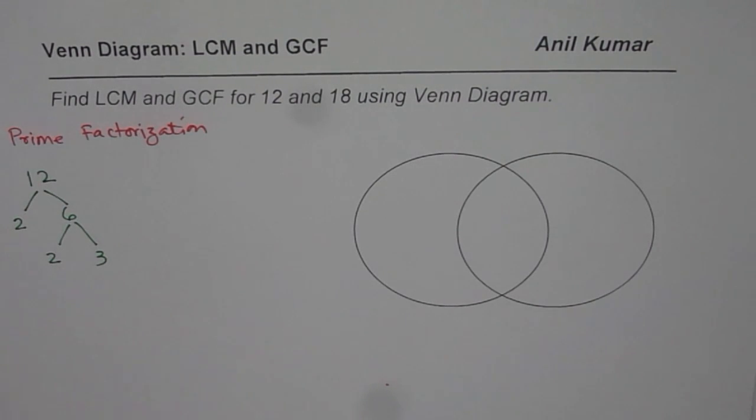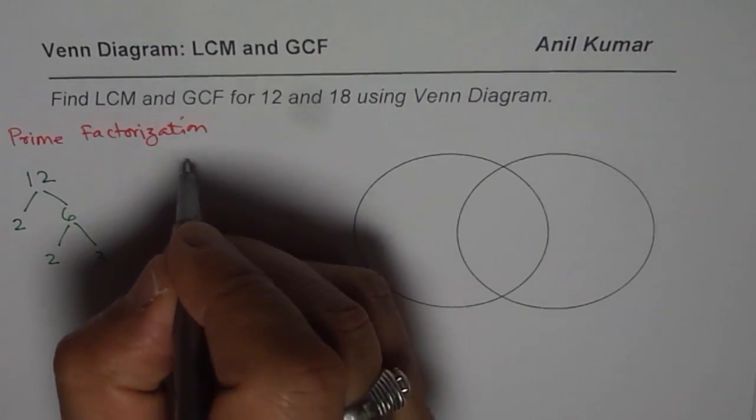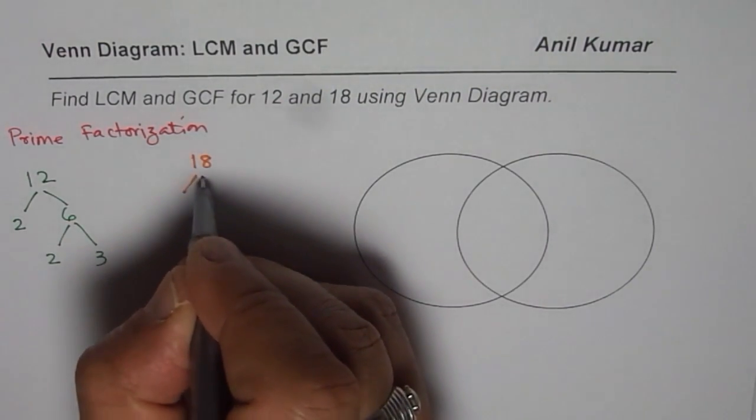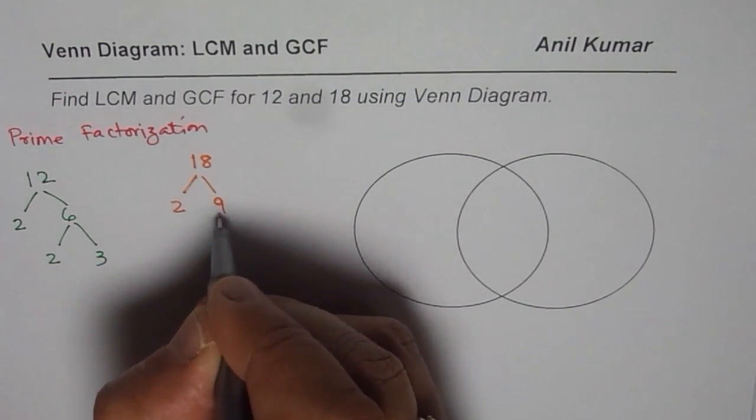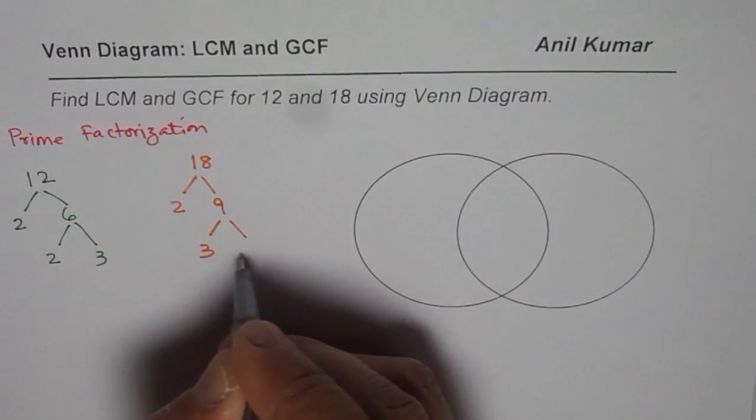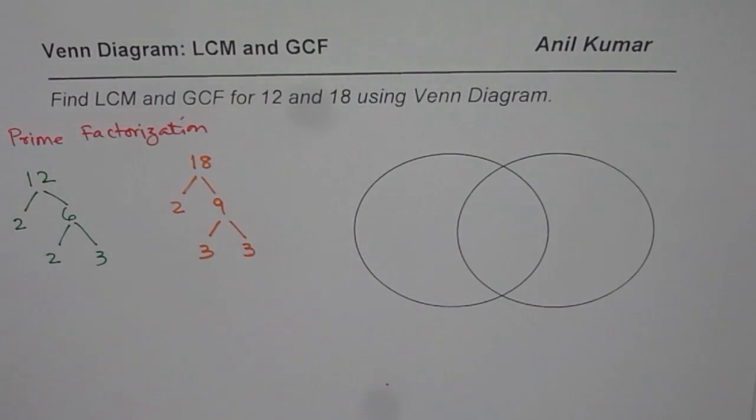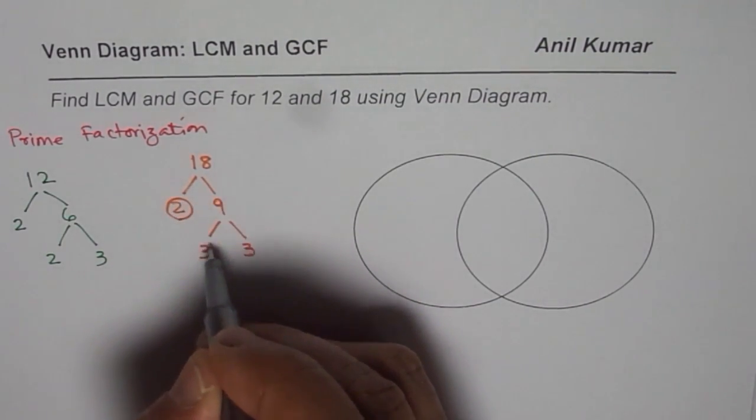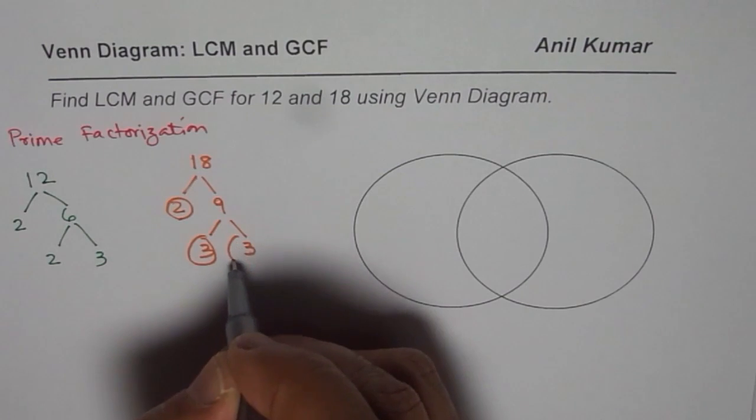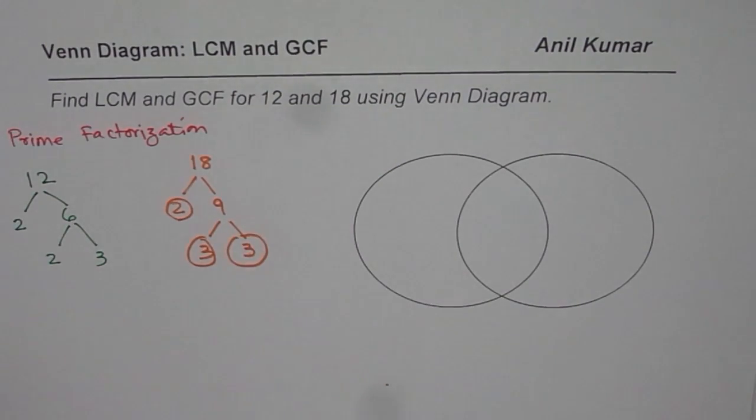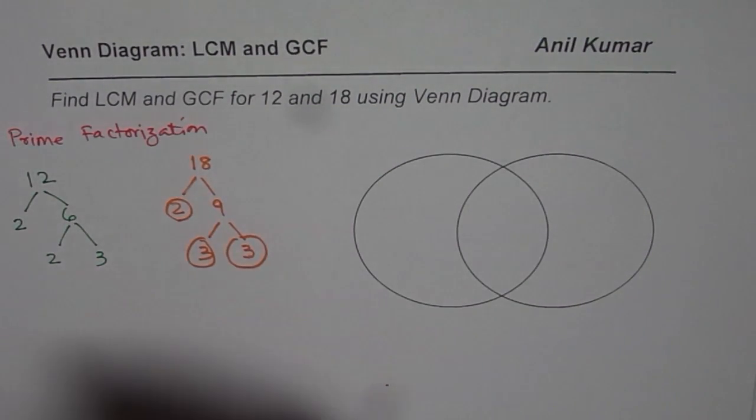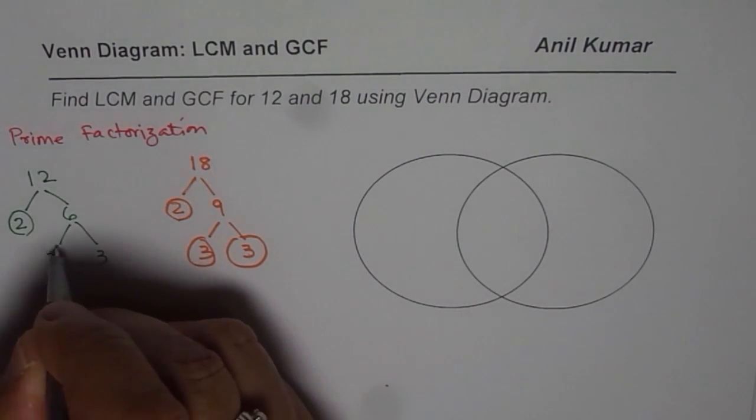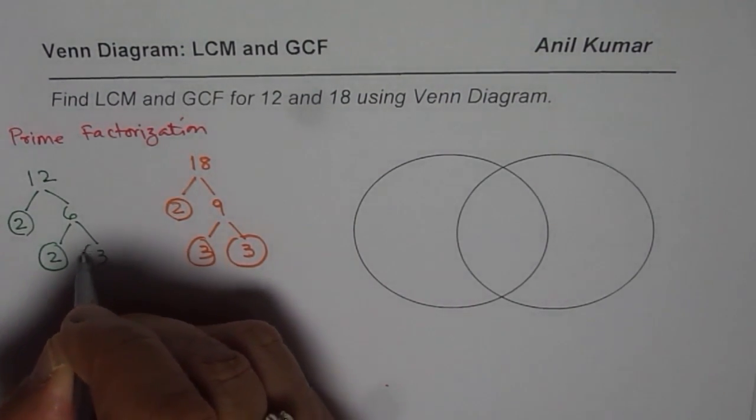Now let us use another ring for 18. So for 18, 18 is 2 times 9 and 9 could be written as 3 times 3. So these are all the prime factors. The prime factors for 18 are 2, 3 and 3. And the prime factors for 12 are 2, 2 and 3.